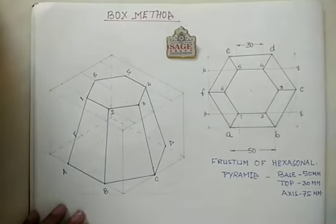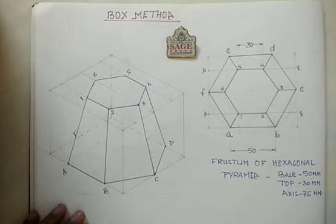This is the way to draw the isometric projection of a frustum of a hexagonal pyramid using the box method. I hope you understand the concepts — try and practice this problem, and you will understand more about how to locate different points.